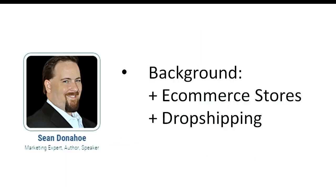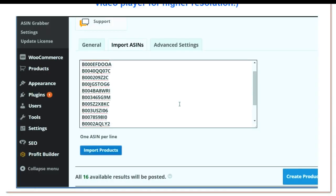If you don't know Sean Donahue's background, he used to run a large multi-million dollar e-commerce store that did dropshipping. Dropshipping is a method of selling products to people at a store, on eBay, or anywhere else, and basically allowing another company — in this example, Amazon — to send the product to that person. He took his experience and strategies and created a powerful WordPress plugin that creates niche-based dropshipping Amazon e-commerce sites in less than half an hour.